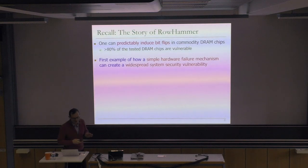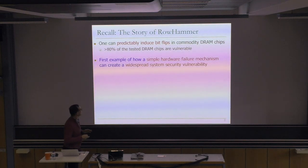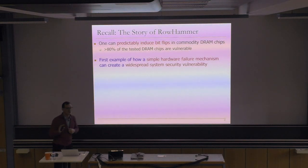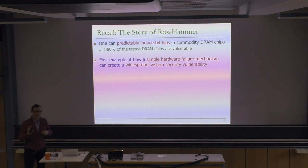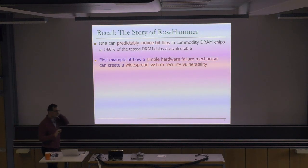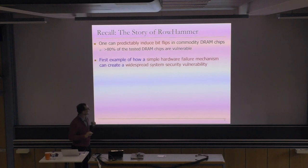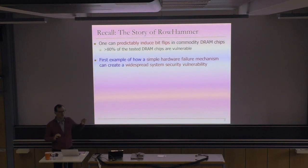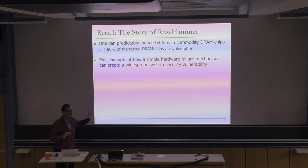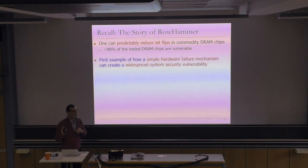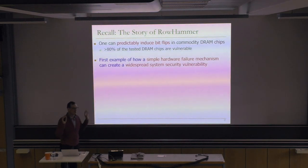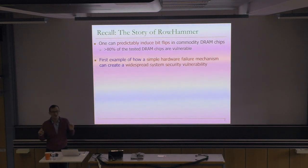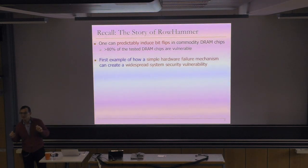Rowhammer is really the first example of a simple hardware failure mechanism that can create a widespread system security vulnerability. I've been looking for other hardware failure mechanisms that can accomplish the same thing, and so far we have not been able to find anything that comes before Rowhammer. It's always good to think: are there other failure mechanisms that could lead to similar security vulnerabilities?